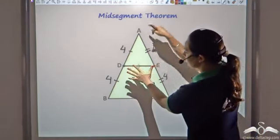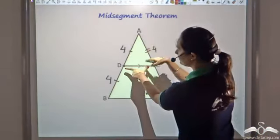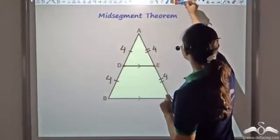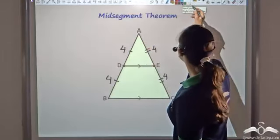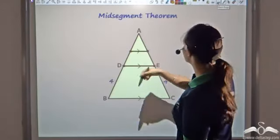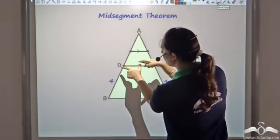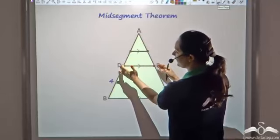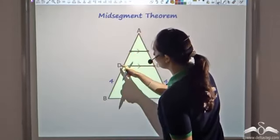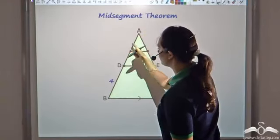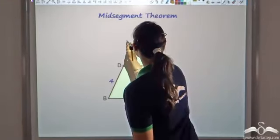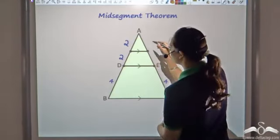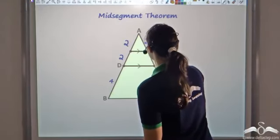Now you see that you have triangle ADE, in which AD is 4 and AE is 4. Now I take the midpoints of this smaller triangle ADE. Since AD was 4 and AE was 4, taking midpoints gives 2 and 2 on each side.